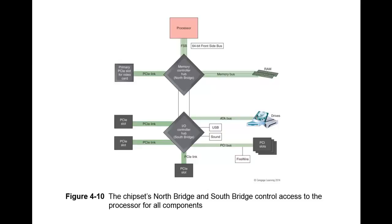Not every chipset architecture is the same. If you take a look at the X58 chipset — referred to by Intel as the Nephilim chipset, seen with the i7 — this contains a memory controller within the processor housing. The memory connects directly to the processor, whereas with other chipsets, memory is tied to the Northbridge hub rather than the processor directly.